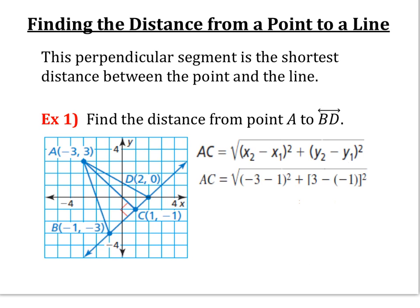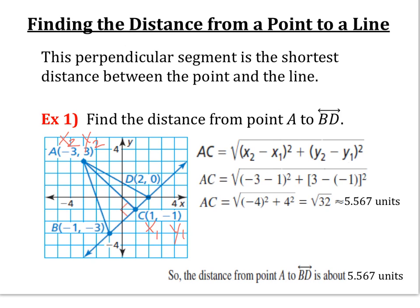Next, substitute the x and y values according to the coordinates. We'll make point A our (x₂, y₂) and point C our (x₁, y₁). Then do order of operations to conclude that (−4)² + 4² under the radical simplifies to the square root of 32. You can type that in the calculator and it comes out to approximately 5.567 units. So the distance from point A to line BD is about 5.567 units.